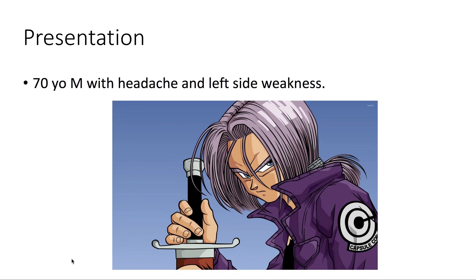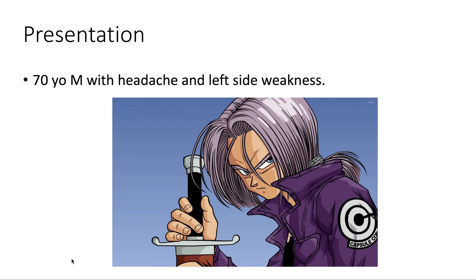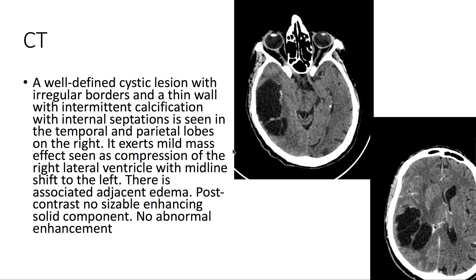We have a 70-year-old male with a headache and left-sided weakness. On CT, we see a well-defined cystic lesion with irregular borders and a thin wall with intermittent calcifications. We also see internal septations. These cysts are located in the temporal and parietal lobes, and they exert some mild mass effect with midline shift.